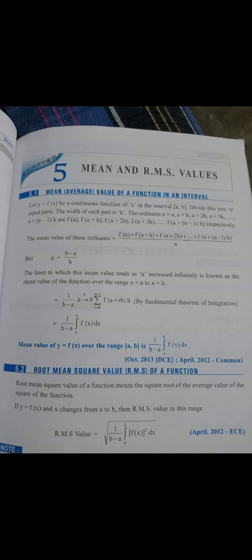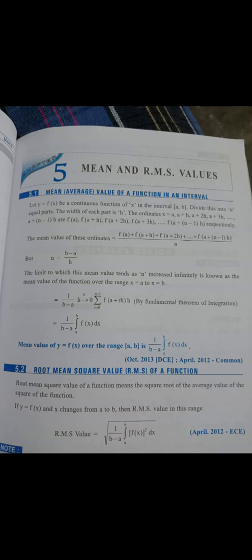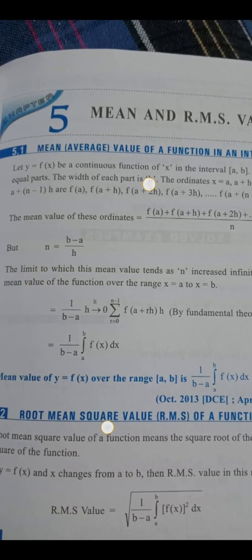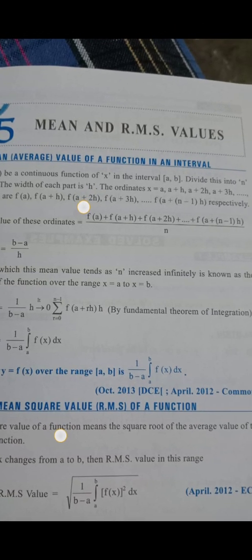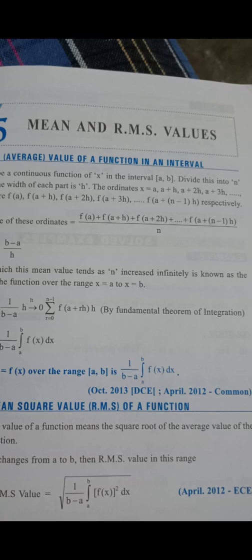The mean value formula is: 1/(b−a) · ∫[a to b] f(x) dx. The mean square value formula is: 1/(b−a) · ∫[a to b] [f(x)]² dx.